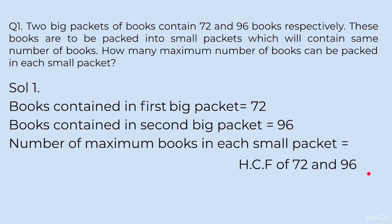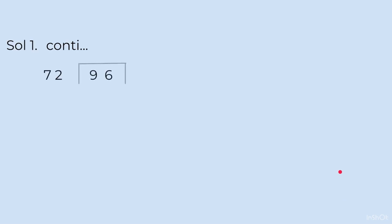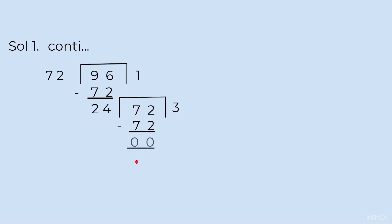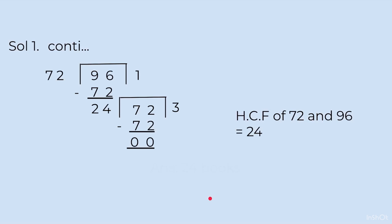Why HCF? Because maximum number has to be found, and maximum is found using the Highest Common Factor. Using the division method: write 96 inside and 72 outside. 72 goes once; subtracting gives 24. Bring 72 inside again; 24 goes 3 times with remainder 0. The divisor at the stage where we get 0 is the HCF — don't confuse it with other numbers. So HCF of 72 and 96 is 24. Answer: 24 books.